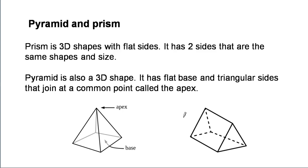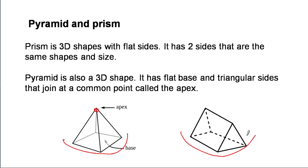Pyramid and prism. A prism is a three-dimensional shape with flat sides. It has two sides that are the same shape and size. A pyramid is also a three-dimensional shape. It has a flat base and triangular sides that join at a common point called the apex. This is a pyramid — it has a flat base and an apex. This is a prism — it has two sides that are the same shape and size.